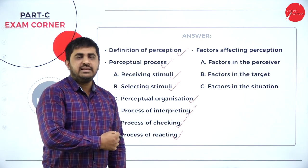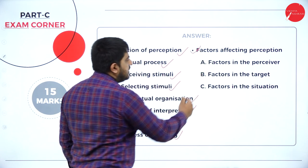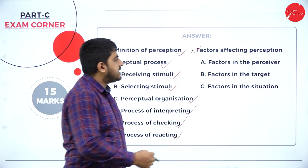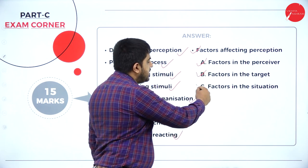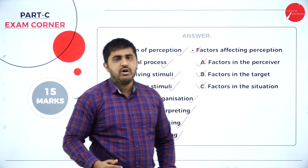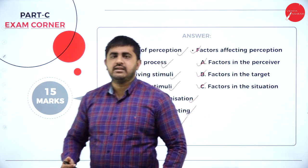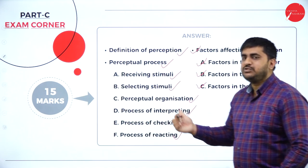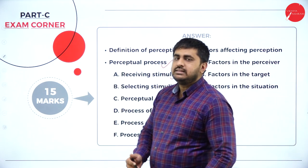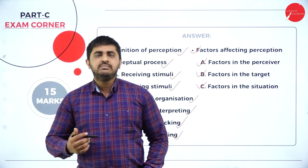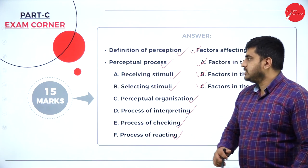After explaining the process, go to factors affecting perception. There are 3 main factors: factors in the perceiver, factors in the target, and factors in the situation. All these have different sub-points inside them which you have to explain. Writing in this format will fetch you 15 marks. Make sure you cover a minimum of 3 sides of your booklet. This is regarding the first question.